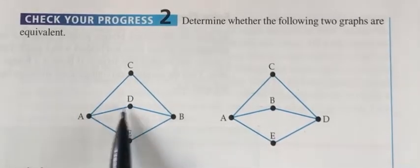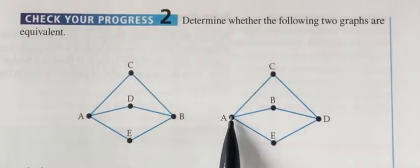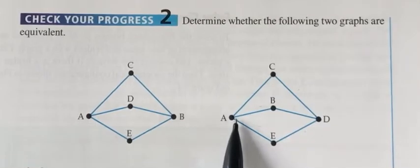A is connected to C and D and E. A is connected to C. A is not connected to D. I'm done.